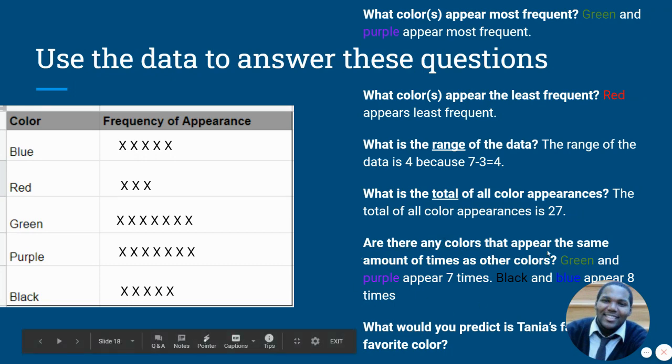Next question. Are there any colors that appear the same amount of times as other colors? I'd say green and purple appears seven times. Black and blue appears. Oh, it says eight times. And I'm sorry, that's a typo on my part. But black and blue only appear how many times? Five times. So we can gather that information that green and purple have the same frequency and so does blue and black have the same frequency.